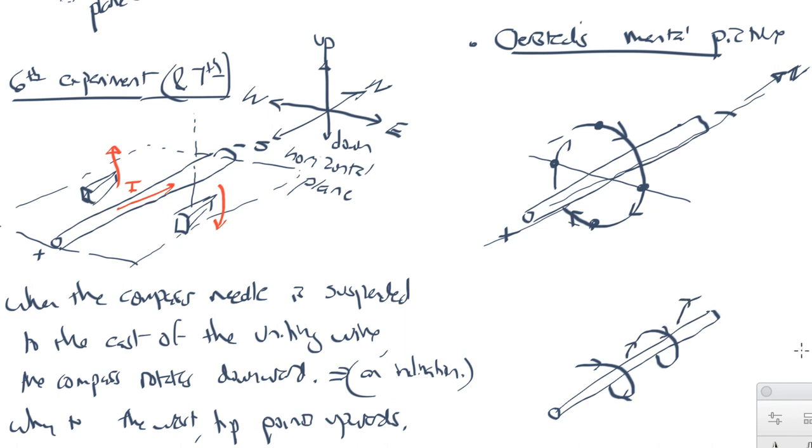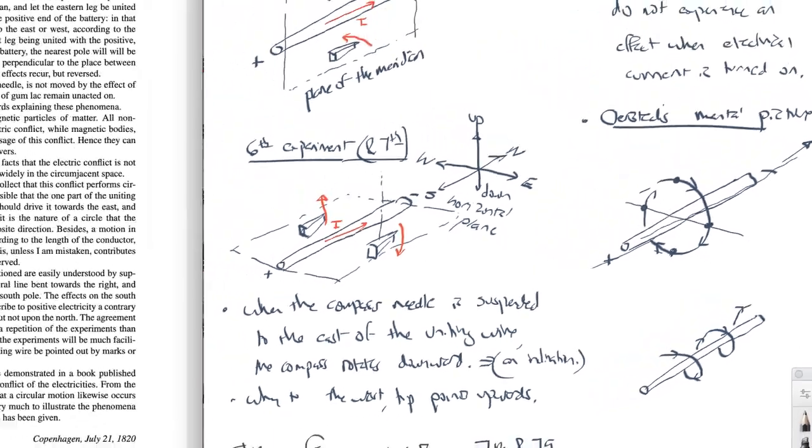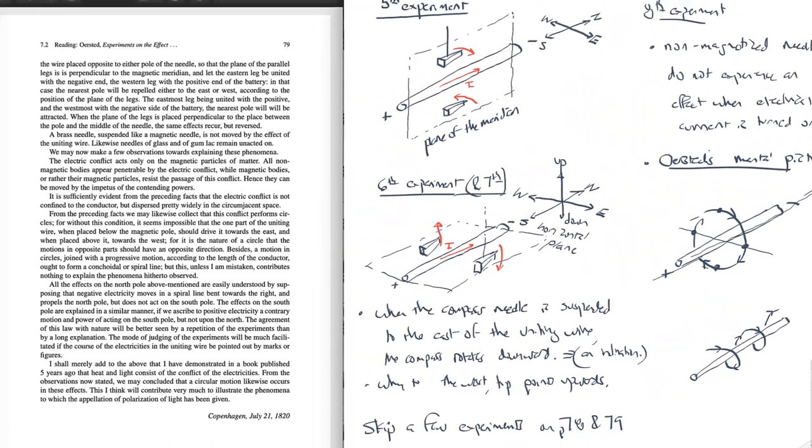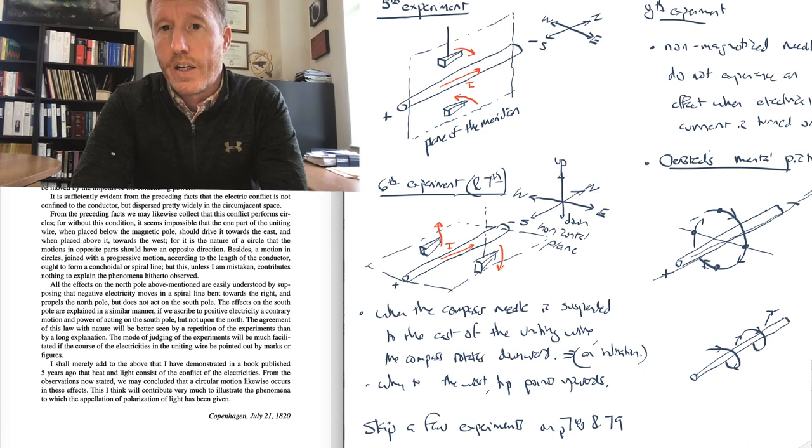Okay. So that is those are the experiments that Ørsted carried out and he describes in this paper from 1820. In the next lecture, what we're going to do is start talking about the work of Ampere. And Ampere is going to pick up where Ørsted left off here and provide a better understanding of the magnetic behavior and the forces exerted on magnets by electrical currents.